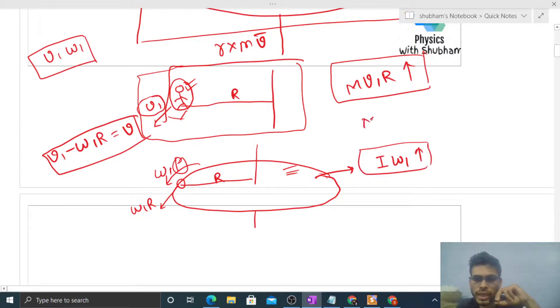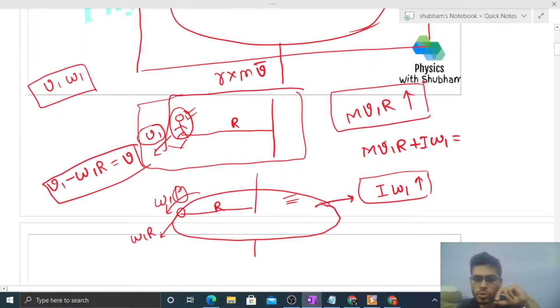Final angular momentum is M v1 R plus I into omega 1, which equals initial angular momentum: I plus MR square into omega.